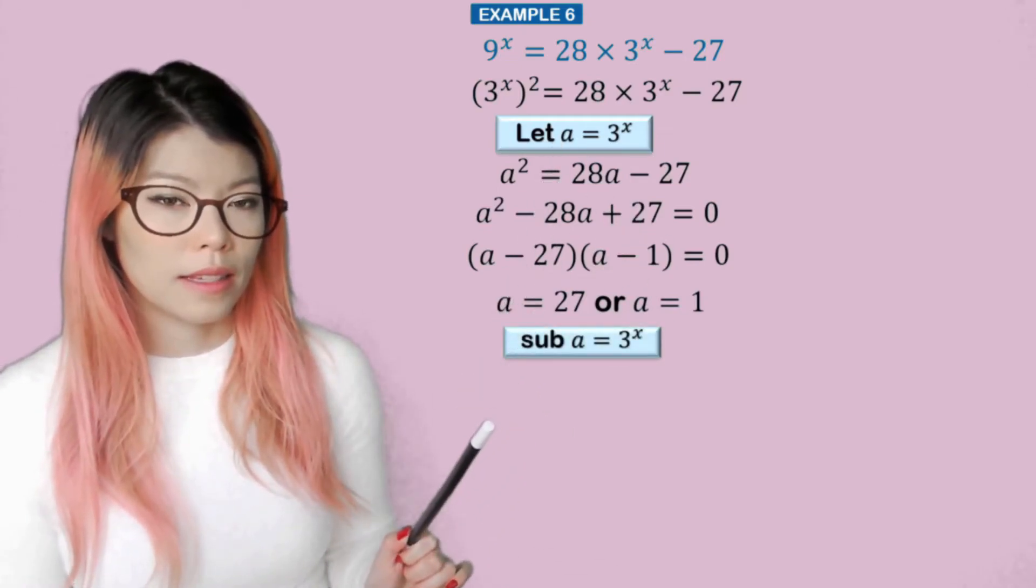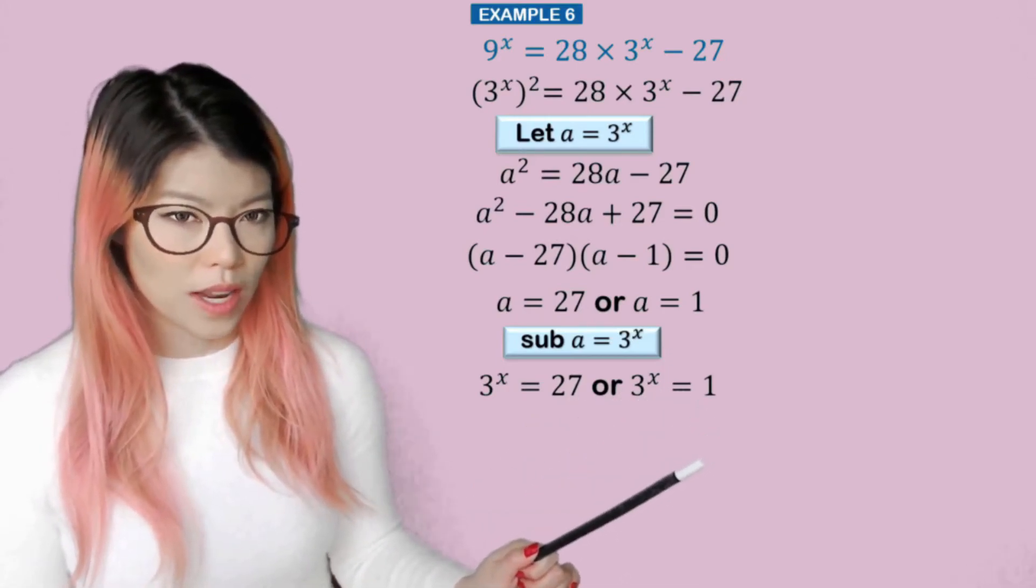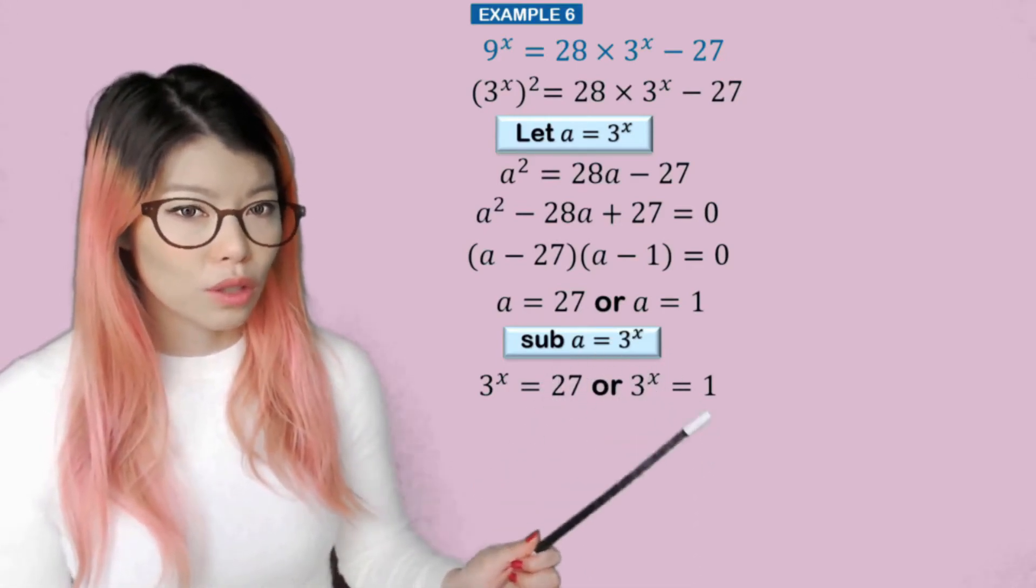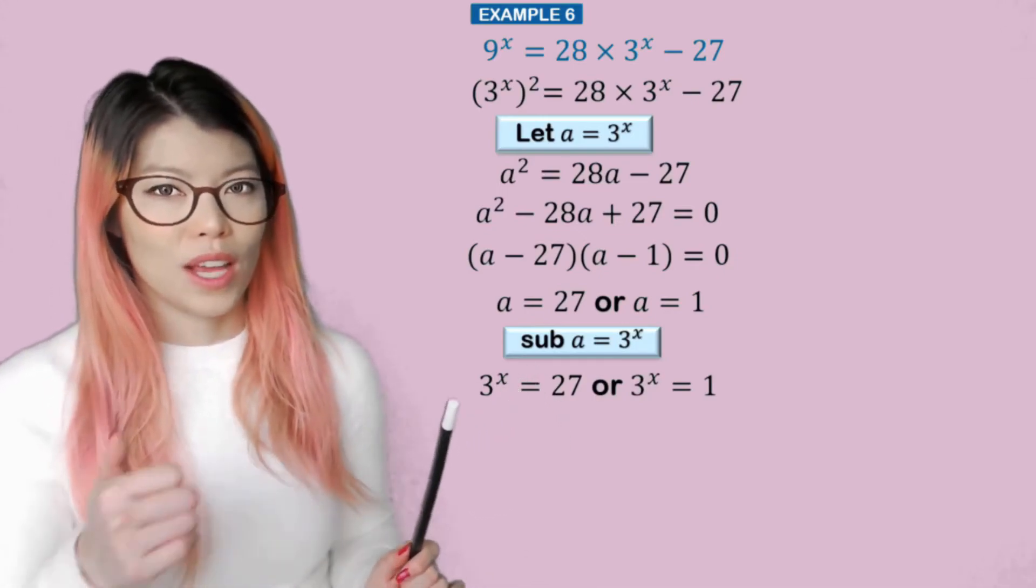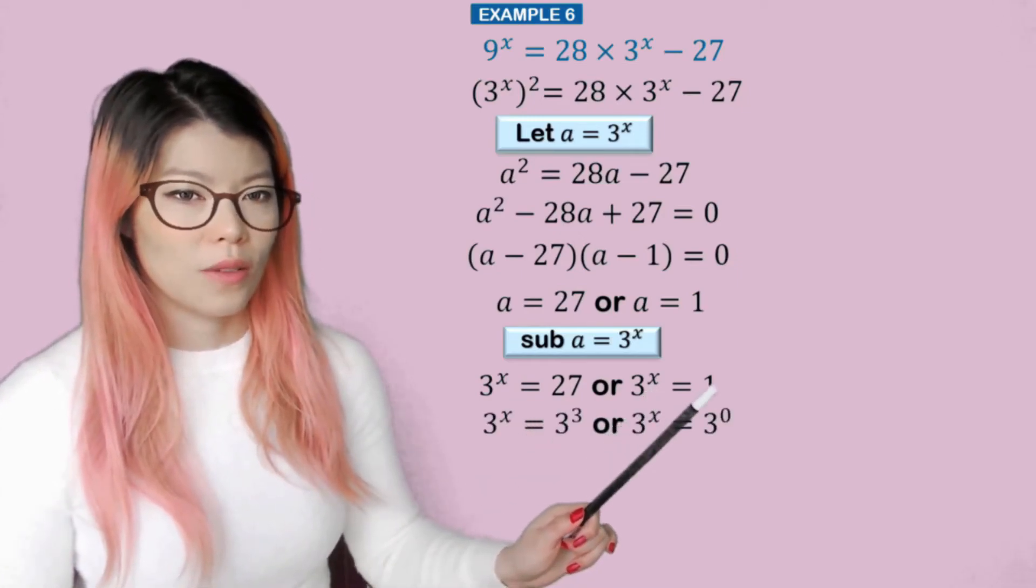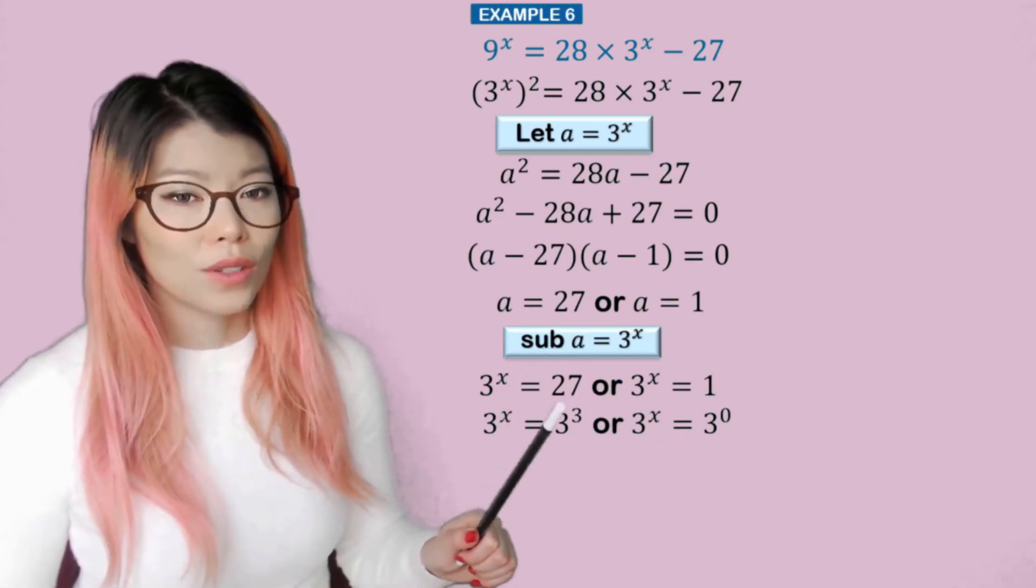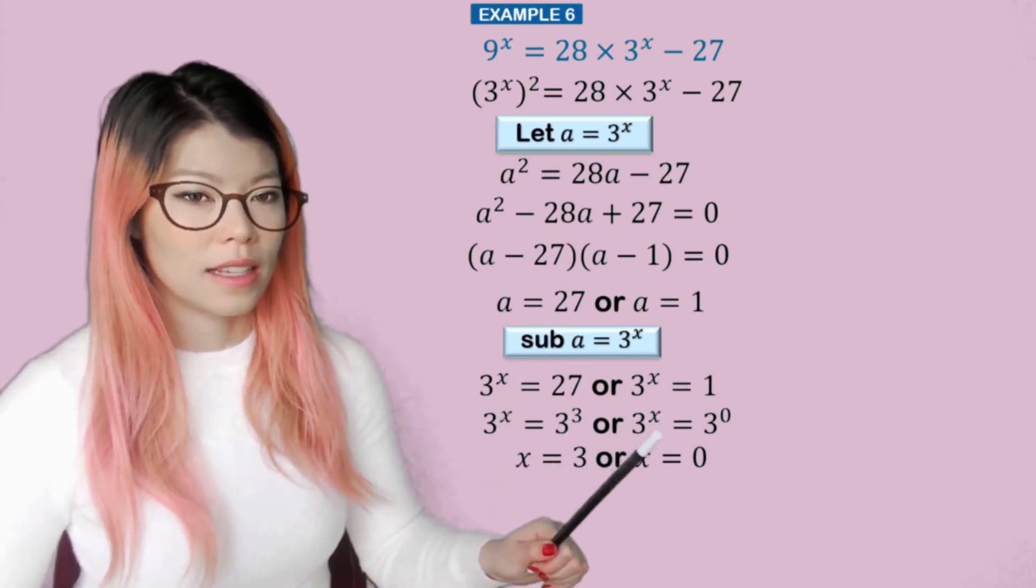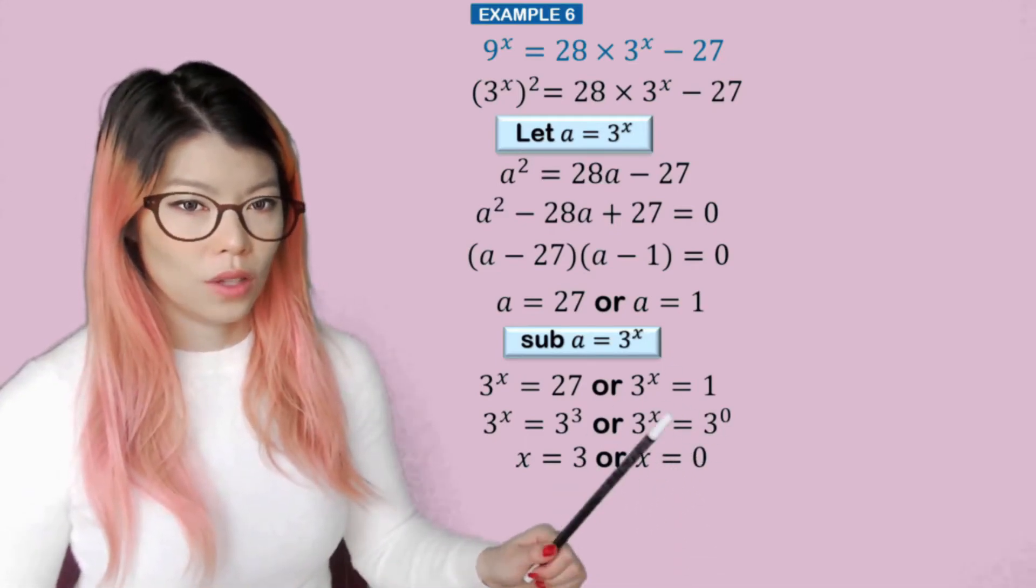So a is 27 and a is 1. Now sub back in. So 3^x is 27 and 3^x is equal to 1. Can we have both solutions this time? Yes, because 27 is the same as 3, 9, 27, so 3 cubed, and 1 is the same as 3 to the power of 0. So x is equal to 3 and x is equal to 0. Be very careful not to forget this solution.